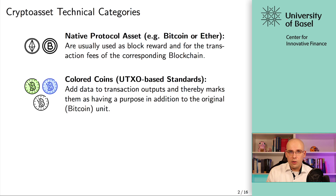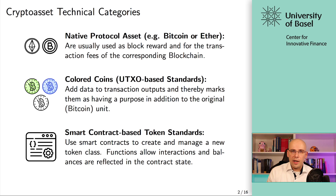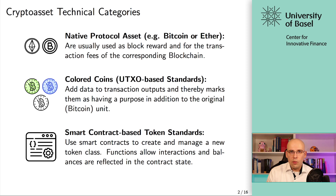These days, the way tokens are implemented is entirely through smart contracts. Smart contracts are used to create and manage a new token class — a new type of fungible tokens — and functions allow interactions while balances are reflected as part of the contract state. You have these mappings that can basically assign a certain value of these tokens to any given address, any given account. That's the standard implementation — the way tokens are created these days.